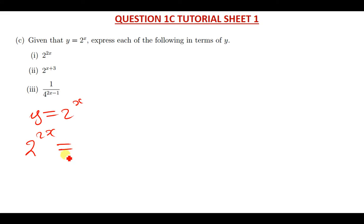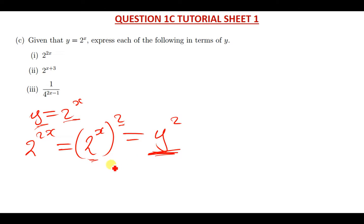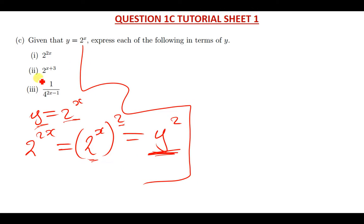So 2 to the power 2x is going to be equal to 2 to the power x, raised to the power 2. Since 2 to the power x equals y, we can replace it with y, so this is just y to the power 2. That's how we express the first one.